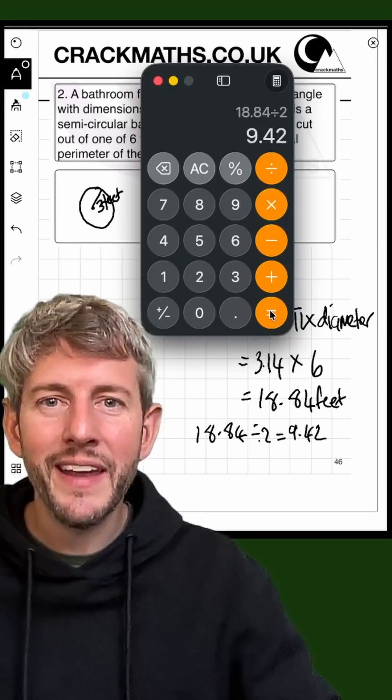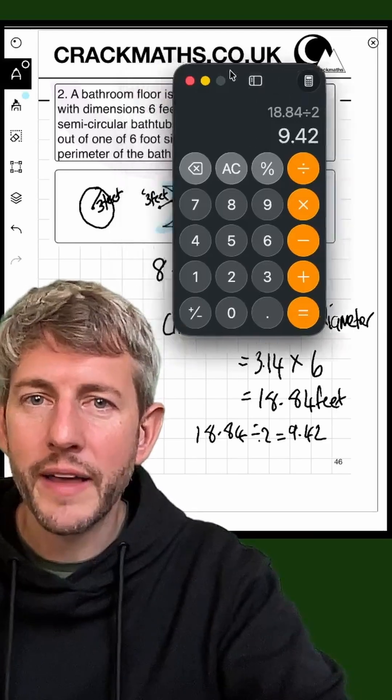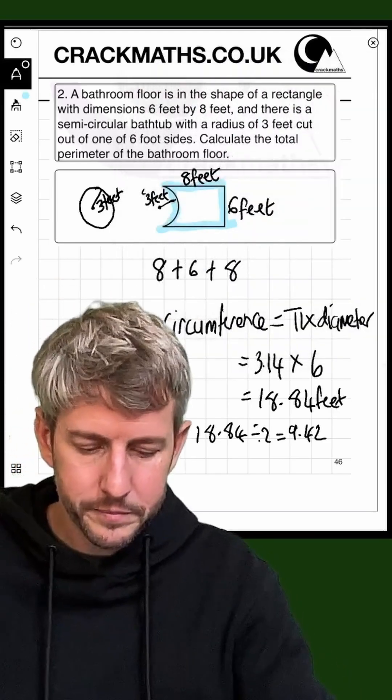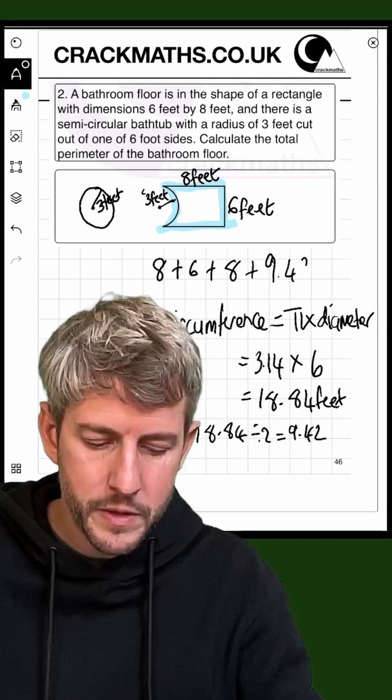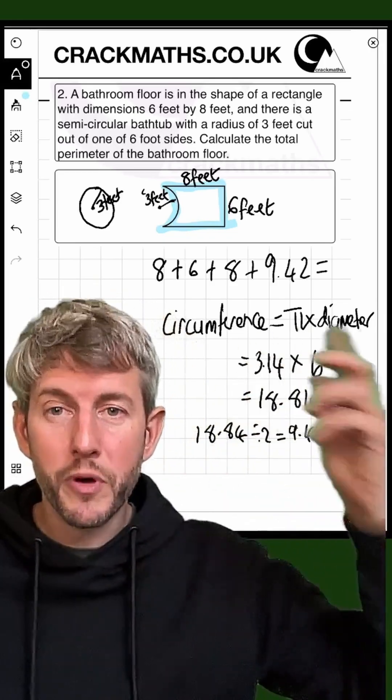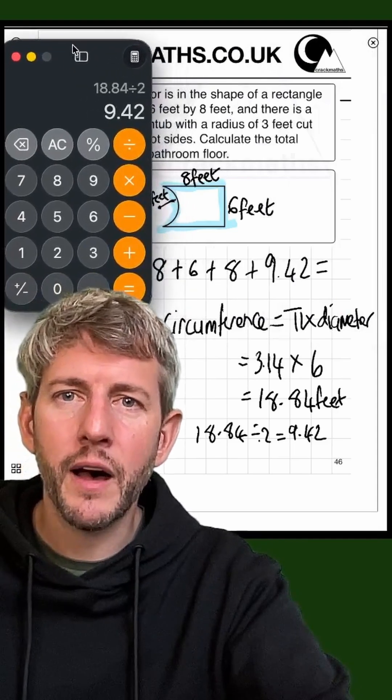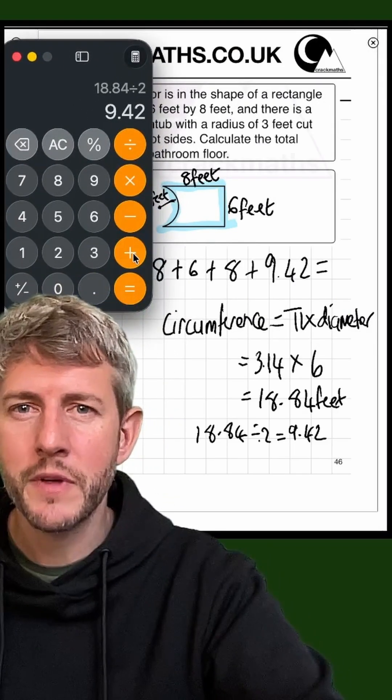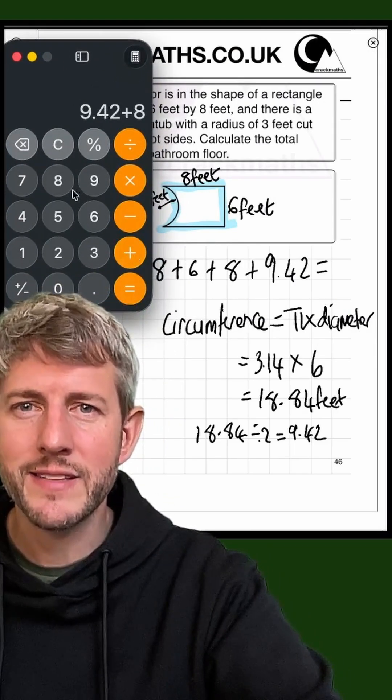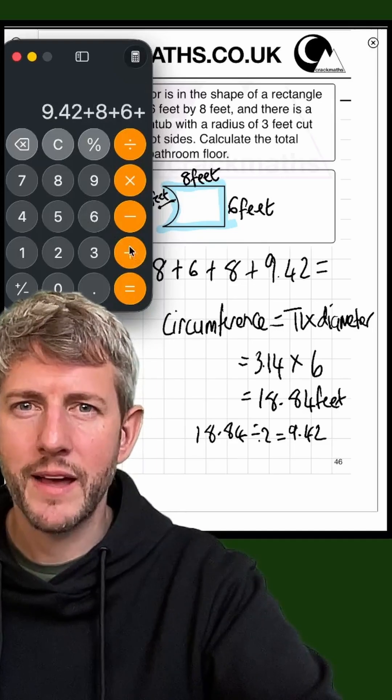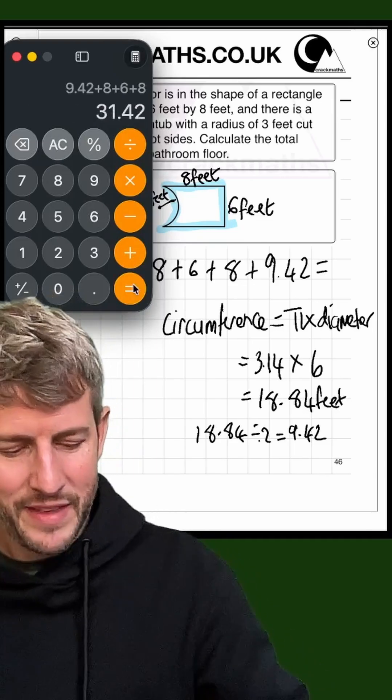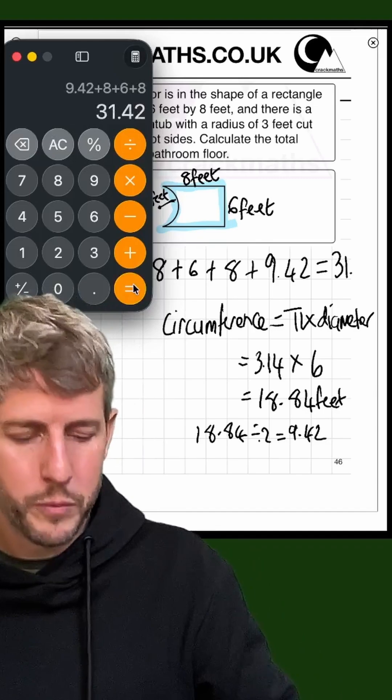So we can then put this into our calculation. We've got 9.42, and this will give us the total perimeter of this shape. So we have got our 9.42, and then we've got add 8, add 6, add 8, and here's our answer: 31.42.